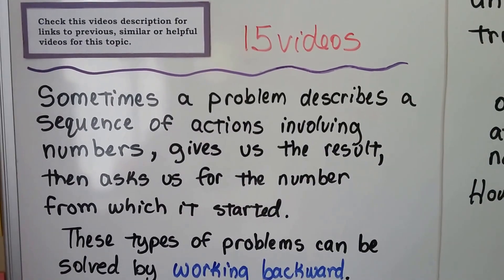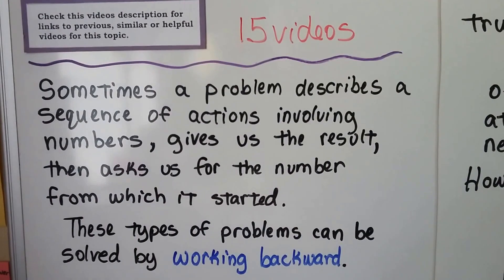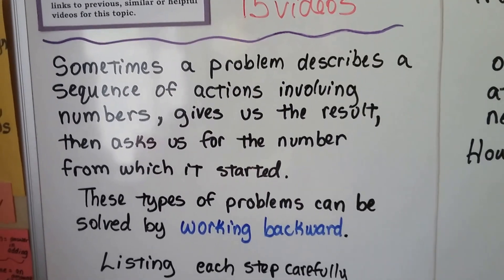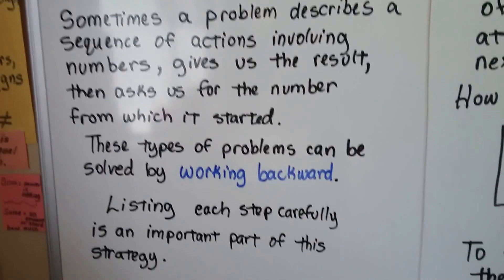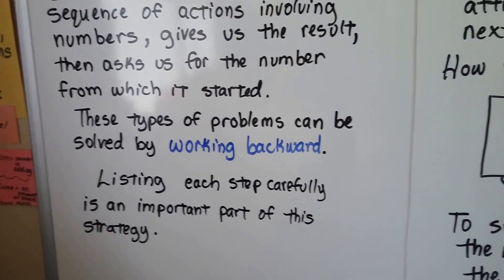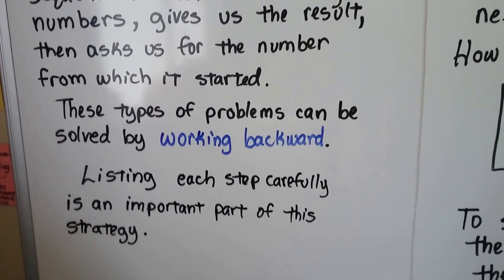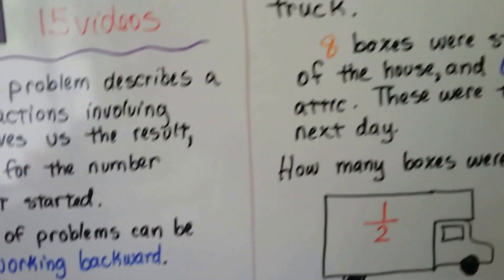Sometimes a problem describes a sequence of actions involving numbers and gives us the result, then asks us for the number from which it started. These types of problems can be solved by working backwards. Listing each step carefully is an important part of this strategy. So let's take a look at our first problem.